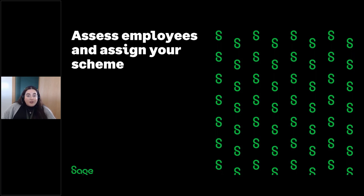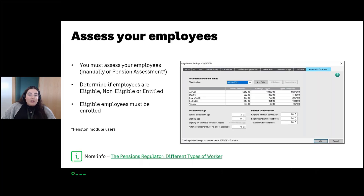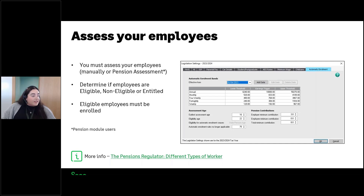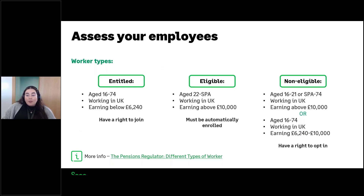As part of your ongoing duties you must assess your employees each time you pay them. You can do this either manually — which we'll be going through today — or if you are a pension module user, via the pension assessment. We have a separate webinar covering the pension assessment if you want more information. You're going to assess your employees to determine which worker category they fall into — eligible, non-eligible, or entitled — and eligible employees are the worker category who must be automatically enrolled into your pension scheme.